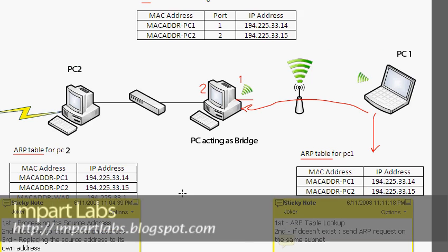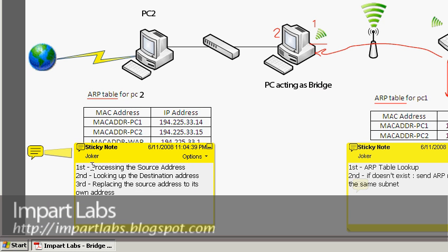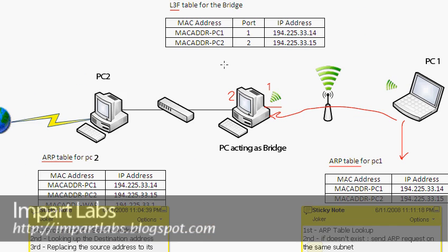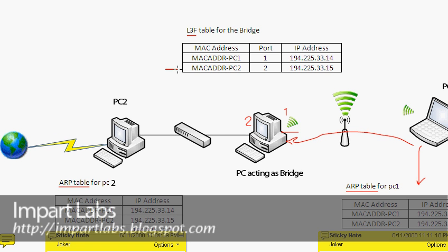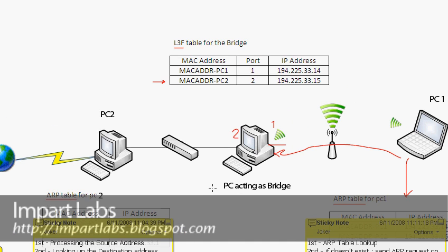When the bridge receives a packet, similar to layer 2, it first processes the source address. If it doesn't already have the source address, it adds the source address with the associated port, IP address, and MAC address to its list. If it already has the source address, it then goes ahead and processes the destination address. If it has the destination address in its list, this is where it differs from layer 2 — the bridge will actually change the sender address to its own address.